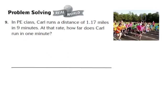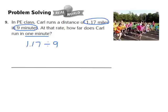Let's take a look at question number 9. It's our first real-world problem-solving question. In PE class, Carl runs a distance of 1 and 17 hundredths miles in 9 minutes. At that rate, how far does Carl run in just 1 minute? So my problem becomes 1 and 17 hundredths divided by 9, and we're going to use our model to represent this division problem to find the quotient.